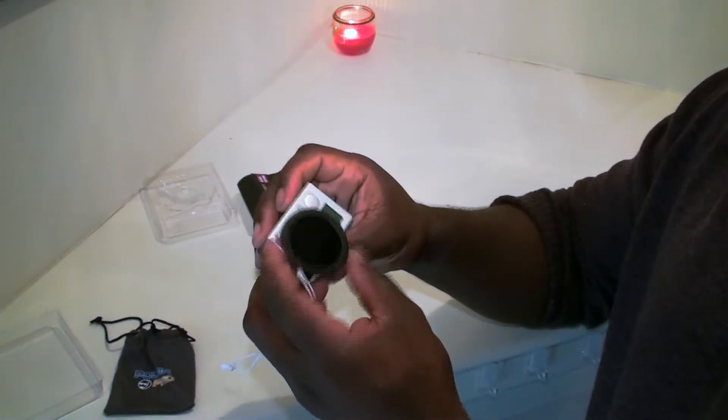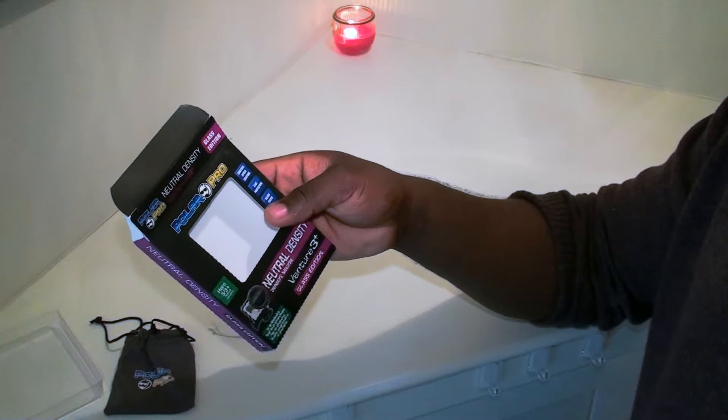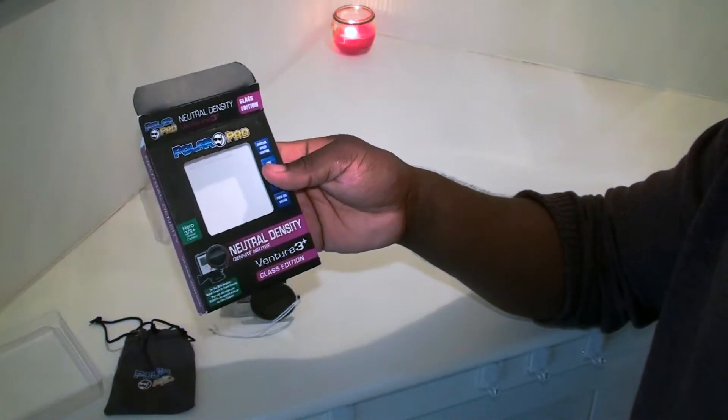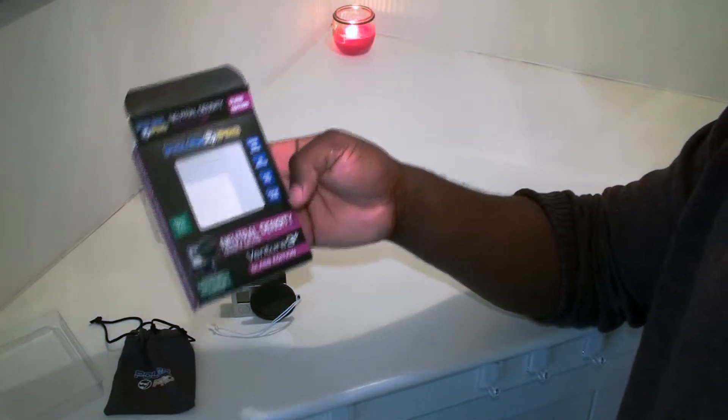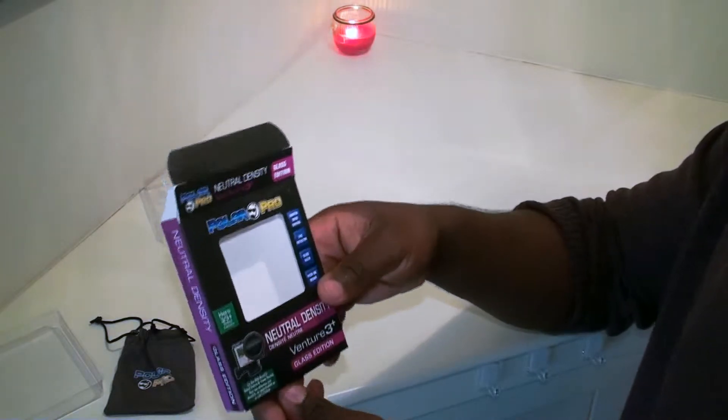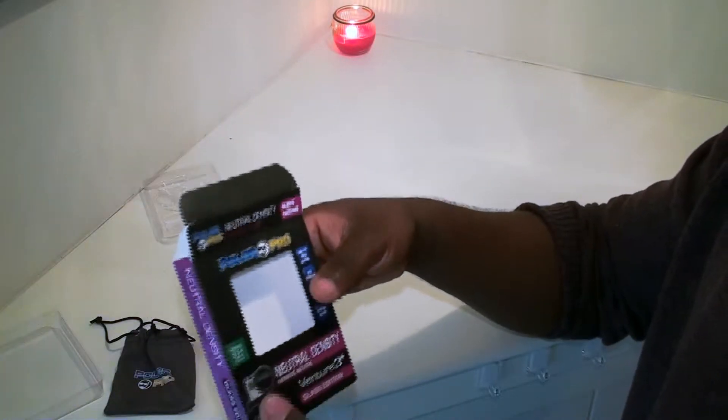And there you have it, your $29 PolarPro Natural Density Venture 3 Glass Edition. I'm guessing there was a plastic edition, I'm not too sure, but your lens filter for your GoPro Hero 3 or Hero 3 Plus to make your video quality a little bit better. Alright guys, I hope this was a little bit helpful when you're buying a lens for your GoPro.